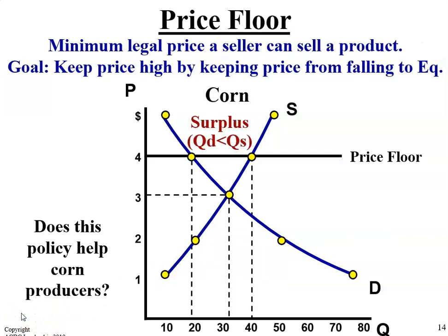A price floor is a minimum legal price that a seller can sell a product. The goal is to keep the price high by keeping it from falling to equilibrium. So what would happen if there was a price floor on corn of $4? The supply would be greater than the demand — so is that going to help corn producers?